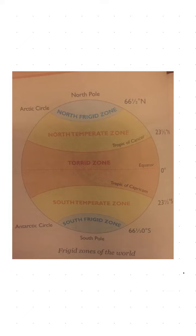It snows continuously — snow hoti rahti hai — and a strong cold wind blows at all times. Poora time strong cold winds blow karti hain. The land is covered by ice sheets and the oceans by ice shells — land ice sheets se covered hota hai aur oceans ice shells se.